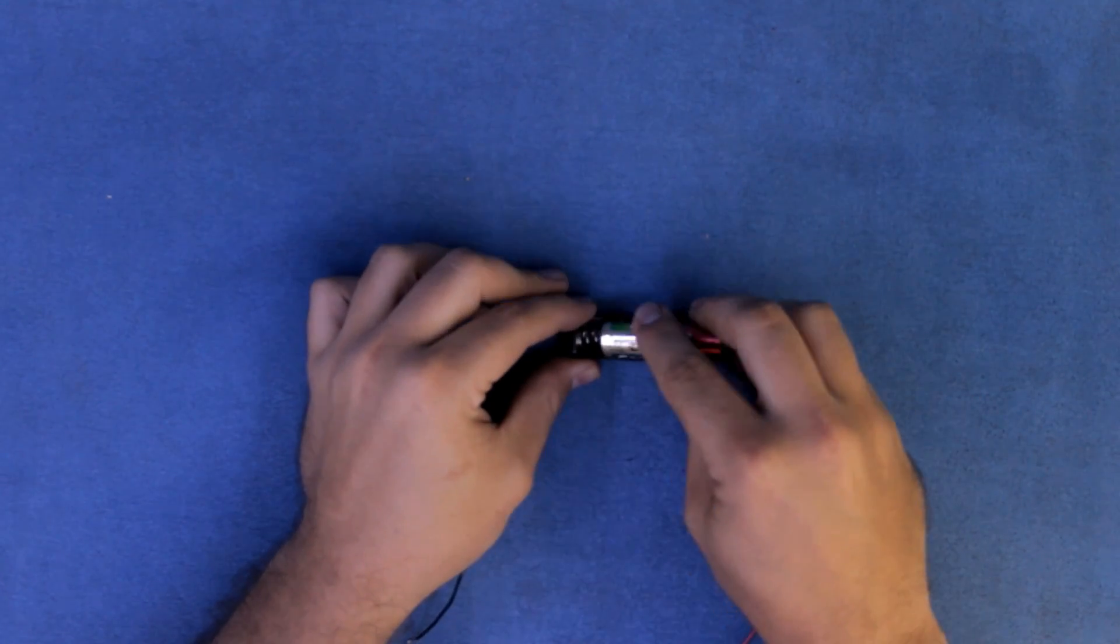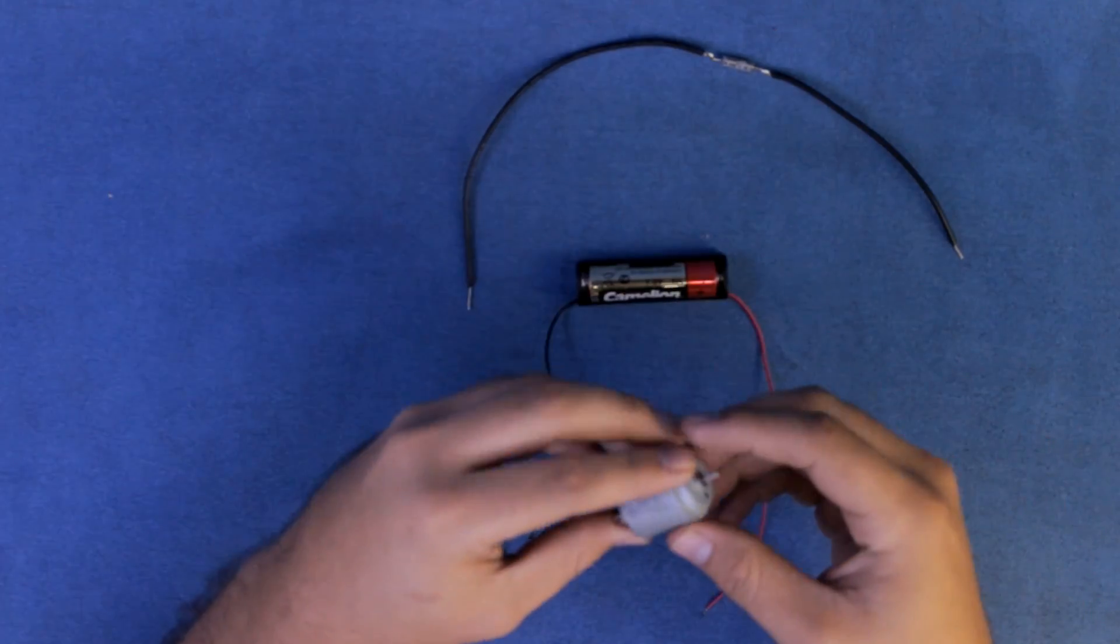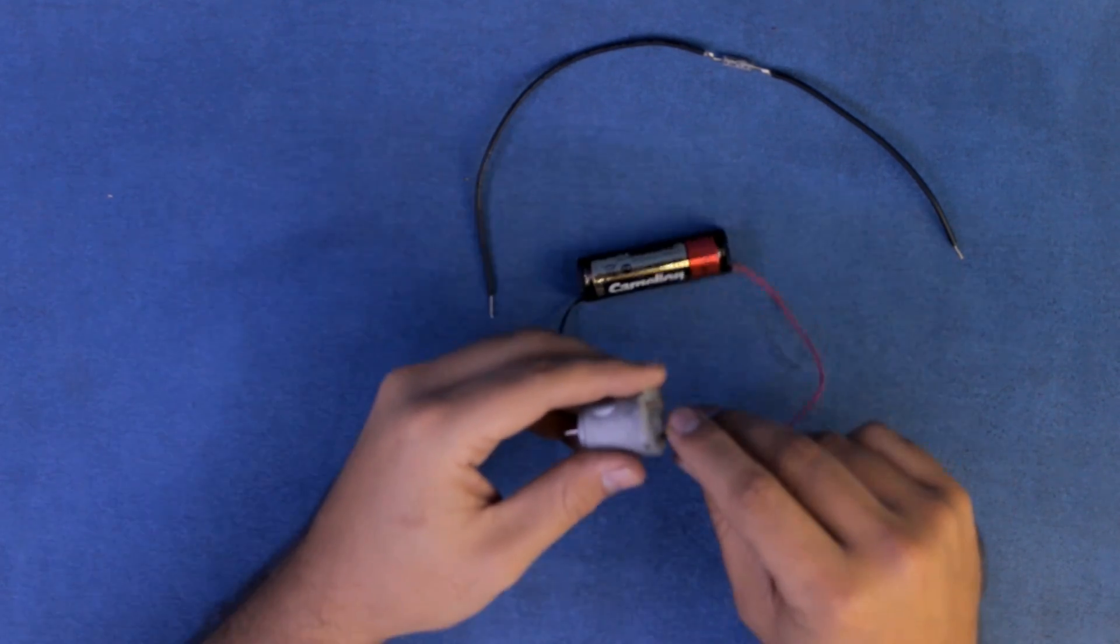First, insert your battery into the battery clip, grab your tilt switch and your motor, then attach your battery clip to the motor.